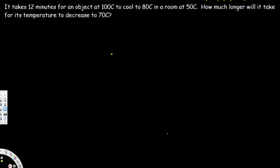This is a Newton's Cooling problem. When we have a Newton's Cooling problem, we use this equation: T(t) = Ts + (T0 - Ts) * e^(-kt). Here T(t) is temperature at time t, Ts is temperature of the surrounding, and T0 is temperature of the object.